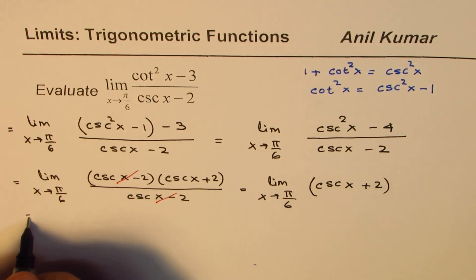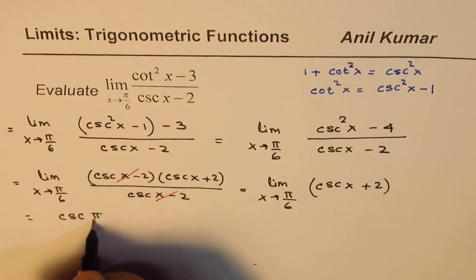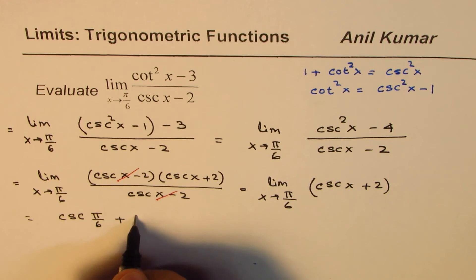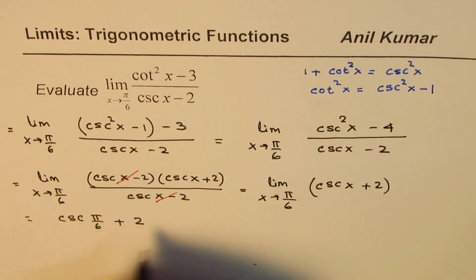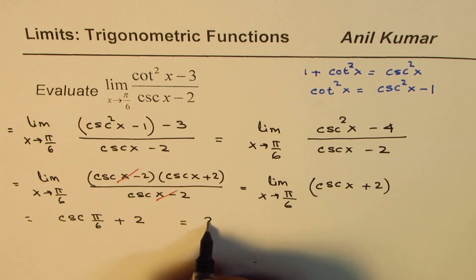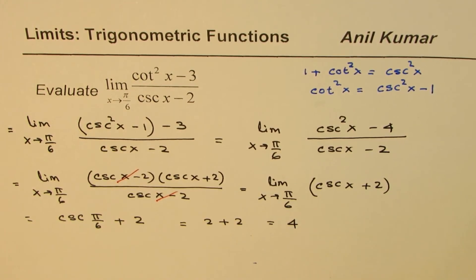Now let's substitute π/6 here. So we get csc(π/6) + 2. Cosecant π/6 is 2, so you get 2 + 2, which is 4. So the answer is 4.